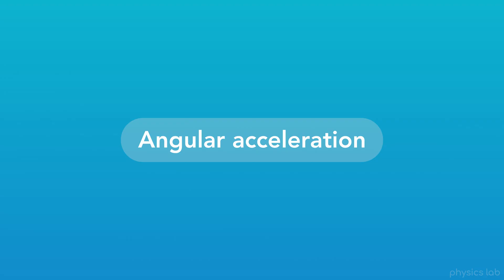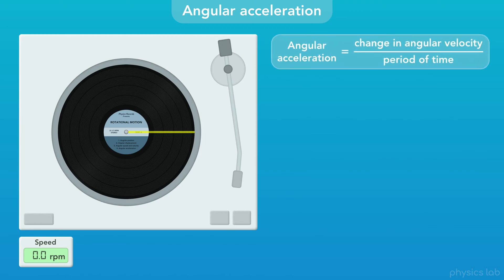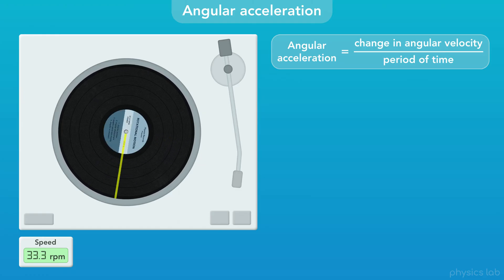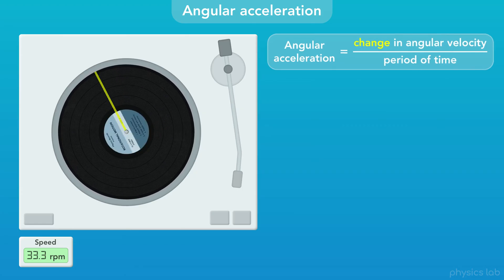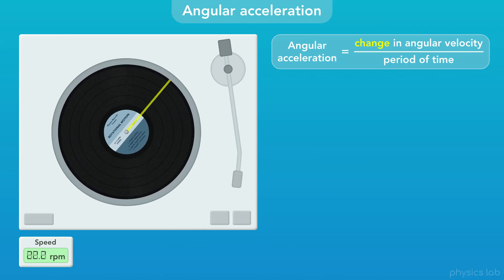The last thing to cover is angular acceleration. Angular acceleration is the change in angular velocity divided by the period of time. If we turn on this record player, the record starts with an angular speed of zero RPM and it needs to accelerate to reach a speed of 33 and a third RPM before the record can be played. Remember, acceleration is a change in velocity — even if that change is negative, or if the object is slowing down, we still call it acceleration.